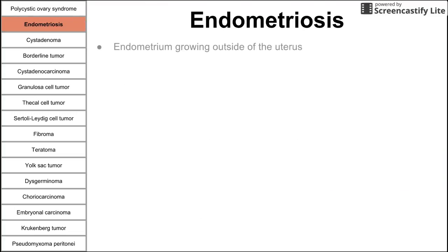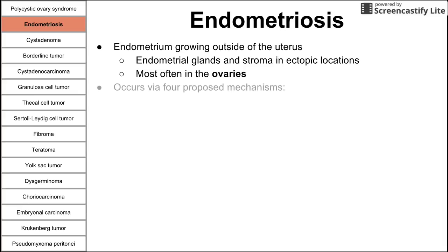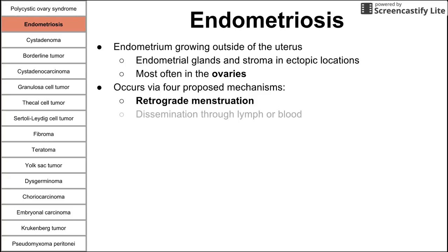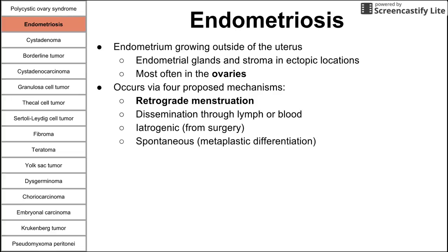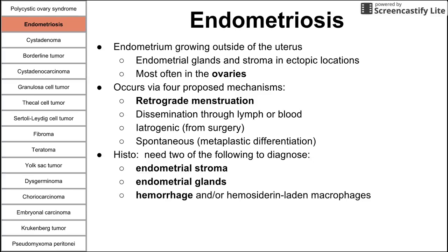Next is endometriosis, when the endometrium — the inner lining of the uterus — grows outside of the uterus. Endometrial glands and stroma are present in ectopic locations, most often found in the ovaries. This occurs via four proposed mechanisms: the main one is retrograde menstruation, where menstruation goes backward through the fallopian tubes into the ovaries. Other mechanisms include lymphatic or hematogenous dissemination, iatrogenic spread after surgery, and a theory of metaplastic differentiation. Histologically, you need two of the following to diagnose: the stroma, the glands, or hemorrhage and hemosiderin-laden macrophages.